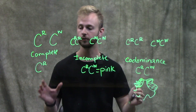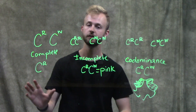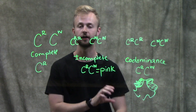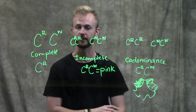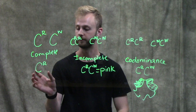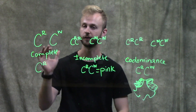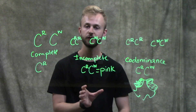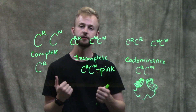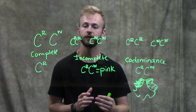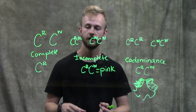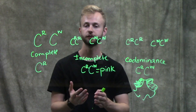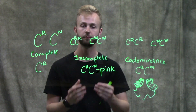Just to review: in complete dominance, one allele is going to completely mask the expression of the second allele, and so the phenotype of the offspring would only be red. In incomplete dominance, the phenotype of your offspring is going to be somewhere in between the phenotypes of the parents — so if we have one red and one white, the offspring would have pink flowers.